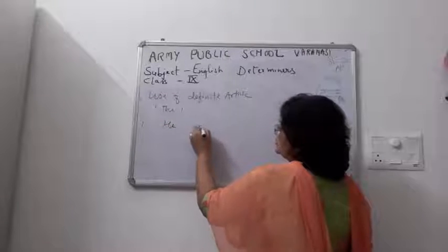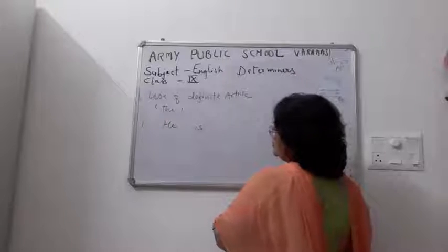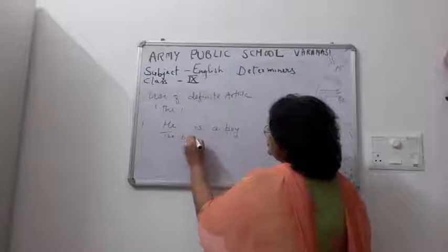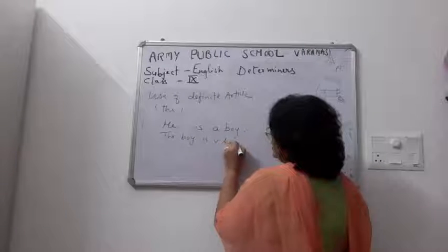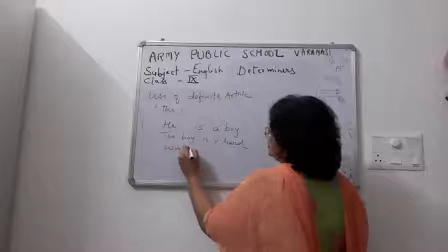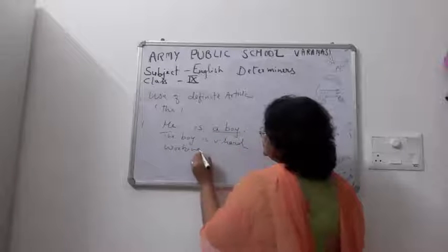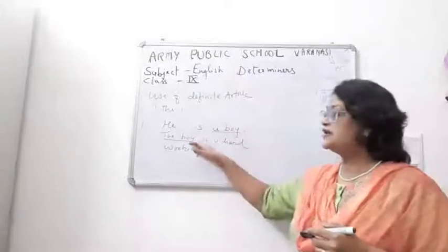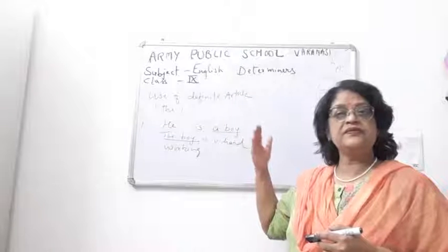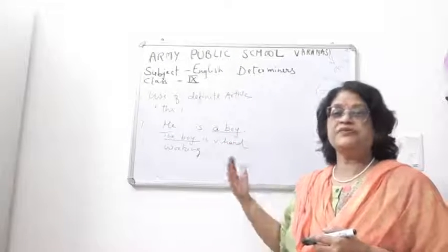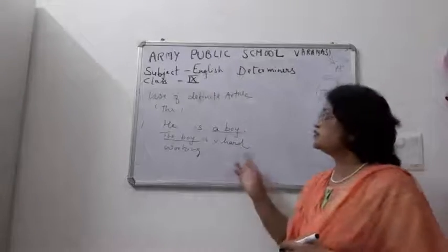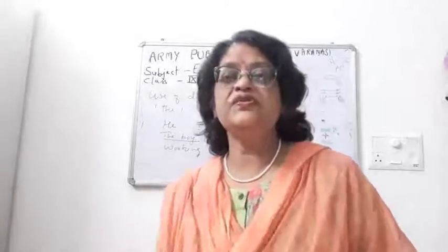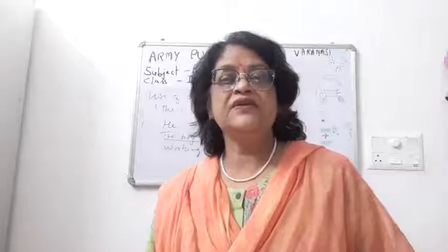For example: 'He is a boy. The boy is very hard working.' When the noun 'boy' is used for the first time we use A, and when it is repeated the second time we use THE — 'The boy is very hardworking.'